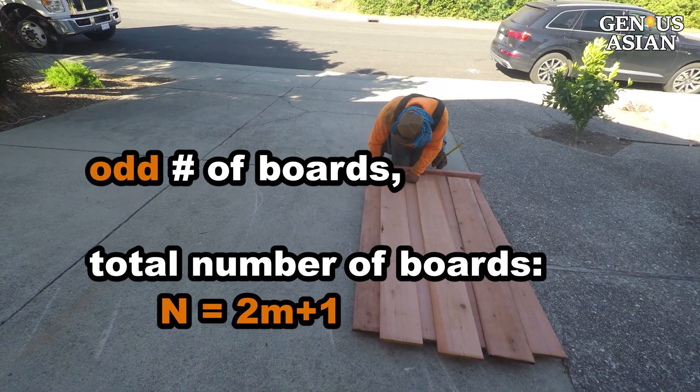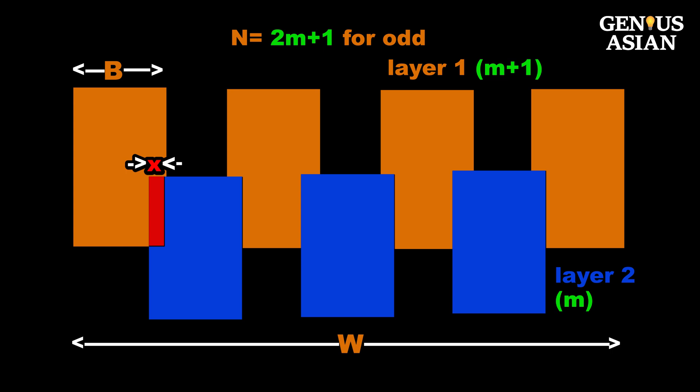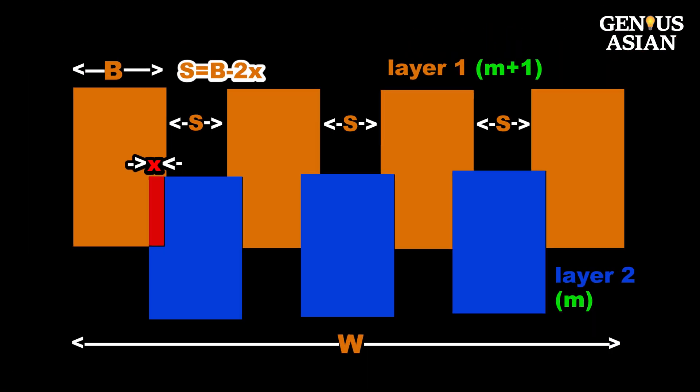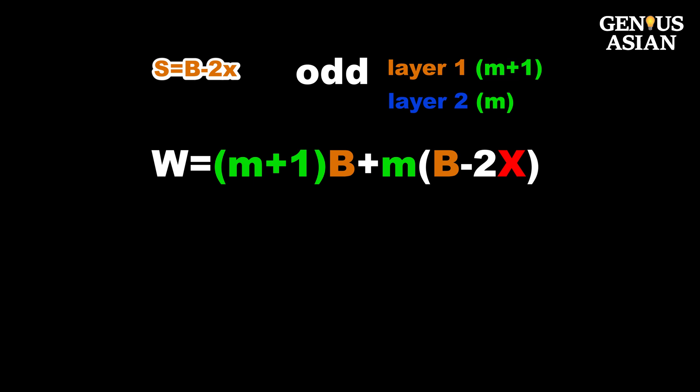When you have an odd number of boards, the first layer has m plus 1 boards and the second layer has m boards, for a total of 2m plus 1. The spacing between each board for the first layer is b minus 2x. Thus, width w satisfies this equation.